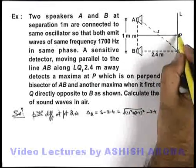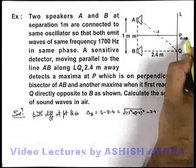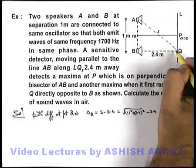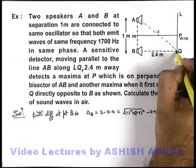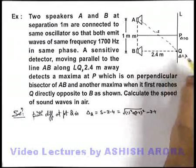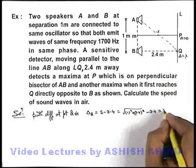And as at point P path difference is zero, next maxima detected at point Q, so we can say here path difference must be equal to lambda.